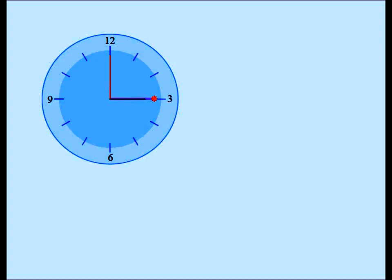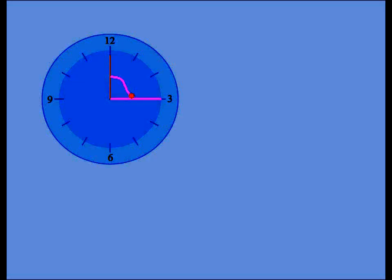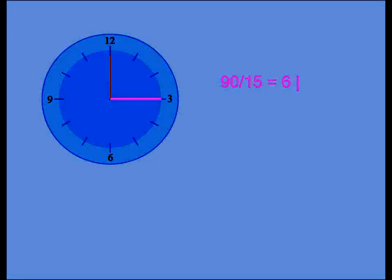Let's find the angle swept by the minute hand — the red hand — every single minute. One can easily see that in 15 minutes, the minute hand sweeps an angle of 90 degrees. If the minute hand sweeps 90 degrees every 15 minutes, you just take 90 and divide it by 15 to get 6 degrees. So the minute hand sweeps an angle of 6 degrees every 1 minute.